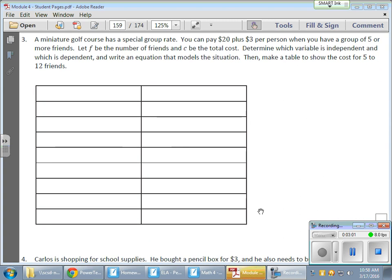Ah, mini golf. So miniature golf course has a special group rate. You can pay $20 plus $3 per person. So when you have a group of five or more friends, you get a special rate. So let F be the number of friends and C be the total cost.